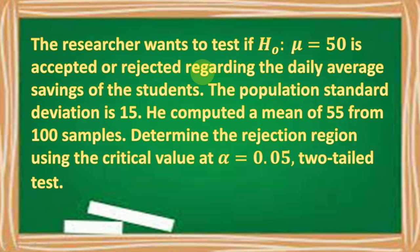Let's have an example. The researcher wants to test if the null hypothesis where mu is equal to 50 is accepted or rejected regarding the daily average savings of the students. The population standard deviation is 15. He computed a mean of 55 from 100 samples. Determine the rejection region using the critical value at a significance level of 0.05 and a two-tailed test. Now let's have the solution by following the steps mentioned earlier.